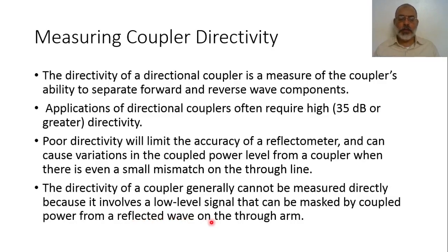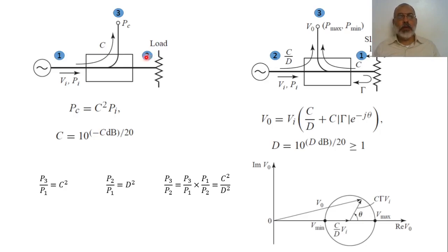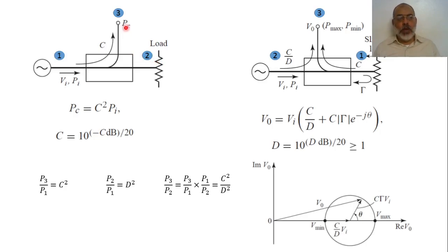We are going to present a measuring mechanism for a coupler, assuming we are talking about a three-port network: port one, port two, and port three. The conventional direction has the wave going from port one to port two, and the coupled signal going from port one to port three. In this case, the directivity is the wave going from port two to port three, which is very small.